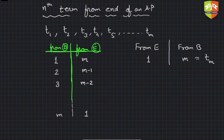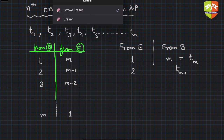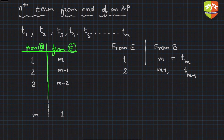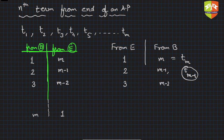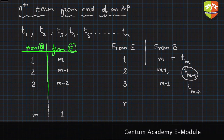From end, the first term corresponds to the mth term from beginning — written as t_m. From end, the second term is (m minus 1)th from beginning — written as t_(m-1). Please understand: when I write t with suffix m or m minus 1, these are terms from the beginning. From end, the third term is (m minus 2)th from the beginning — written as t_(m-2).